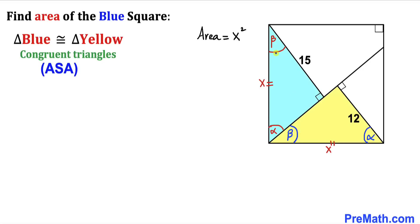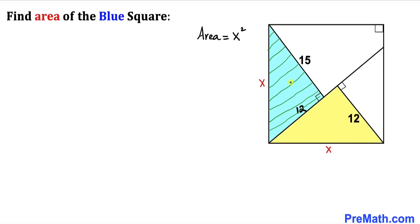So therefore likewise in this blue triangle, the side opposite this angle beta must also be 12 units.